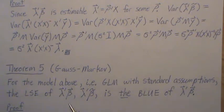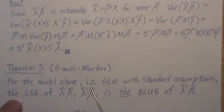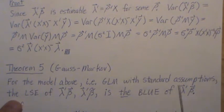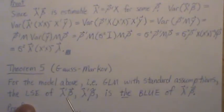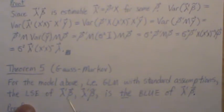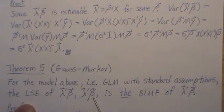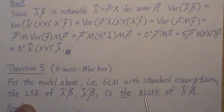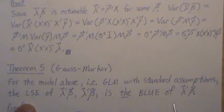Assuming that we're in the model above, i.e. the general linear model with standard assumptions, the least squares estimate of this estimable function lambda prime beta, which is lambda prime beta tilde, is the BLUE of this estimable function. BLUE stands for best linear unbiased estimator, and it's unique.